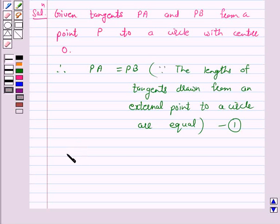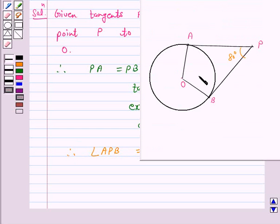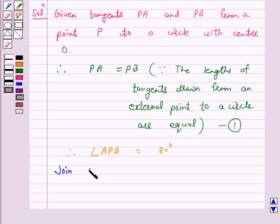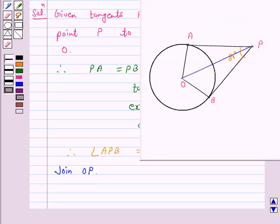Therefore, angle APB is equal to 80 degrees.